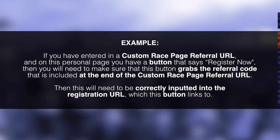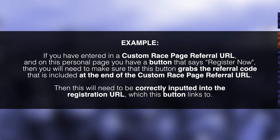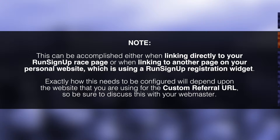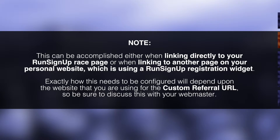For example, if you have entered a custom race page referral URL and on that personal page there is a button that says 'Register Now,' you and/or your webmaster will need to make sure that this button grabs the referral code included at the end of your custom URL and correctly inputs it into the registration URL that this button will link to. This can be accomplished either when linking to RunSignup or when linking to another page on your personal website using a RunSignup registration widget. Exactly how this needs to be configured will depend on the website you are using, so be sure to discuss this with your webmaster.